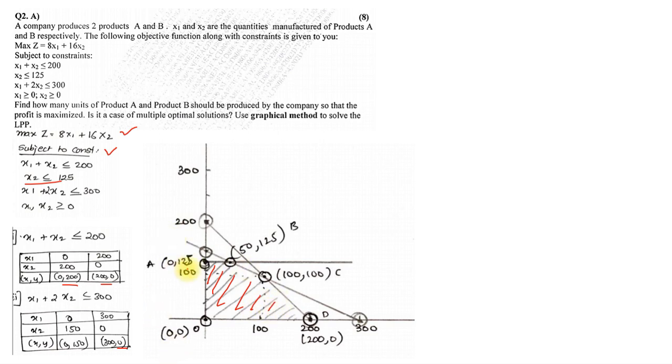This is 0,0, this was 0,125, this was straightforward 100,100, but for this point we don't know what was the exact value, so we solved it simultaneously. So x1 plus 2x2 was 300 and x2 is 125. We substituted x2 as 125. We got 300 minus 250 which is 50, so our coordinate is 50,125, and this was 200,0.